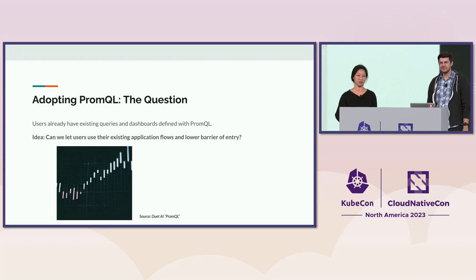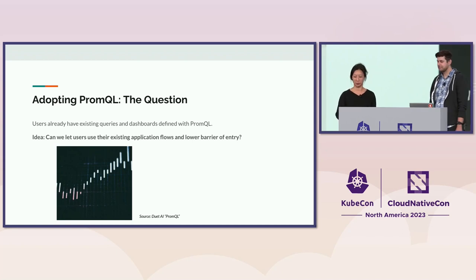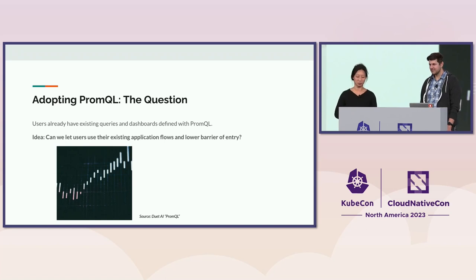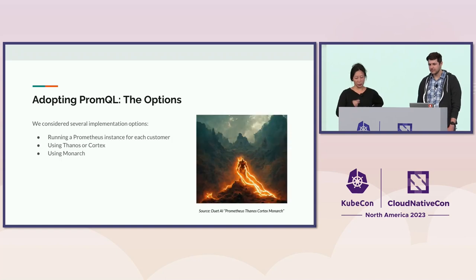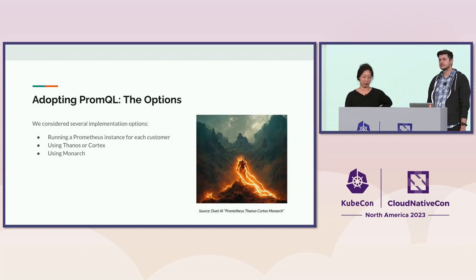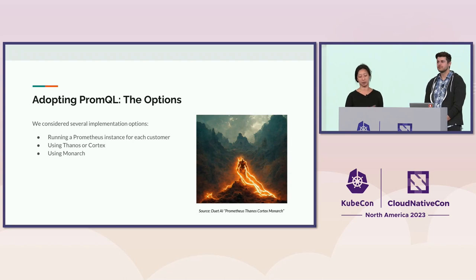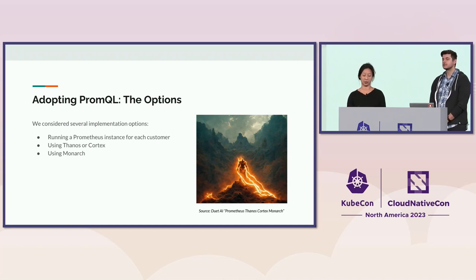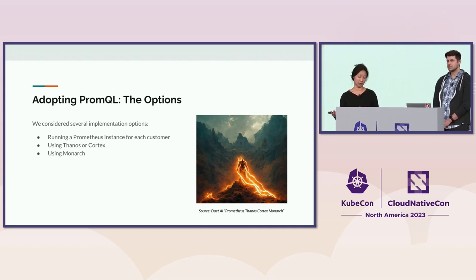People already have lots of existing queries and dashboards defined with PromQL and they already know how to use it well. The question is how can we lower the barrier to entry — and by the way, this is what AI thinks PromQL looks like. We want to solve this problem by having our system expose the Prometheus HTTP API, including queries, cells, and supporting functionality like autocomplete, metadata, exemplars, and so on. We considered several options. First: running many separate vanilla Prometheus instances, but the issue is there's no long-term storage and it can be really difficult to shard horizontally.